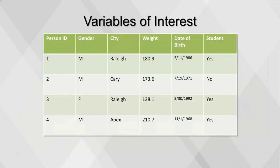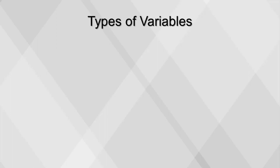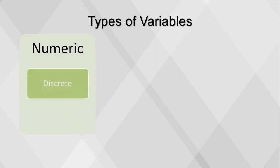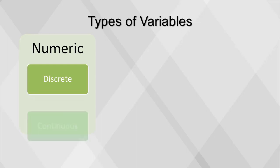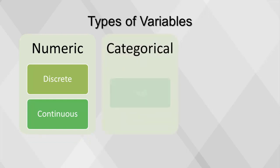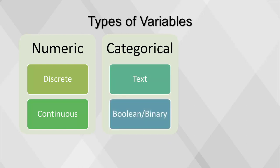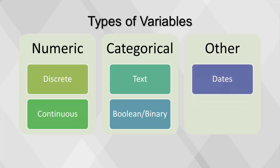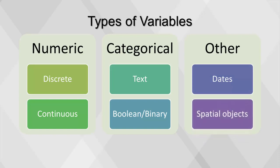Once the variables of interest have been selected, they can be renamed if needed and assigned the proper data type. There are two common variable types: numeric and categorical. Numeric variables include discrete variables—whole numbers used for counting and IDs—and continuous variables, which are numbers with decimals used for measuring. Categorical variables include text, which is any combination of letters, numbers, and symbols in strings or characters, and Boolean or binary variables, which contain only one of two possible values. Variables that can be treated as either numeric or categorical include dates such as date-time, date or time, and spatial objects which show location such as latitude and longitude.